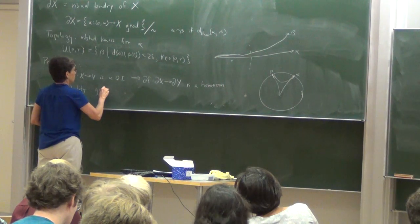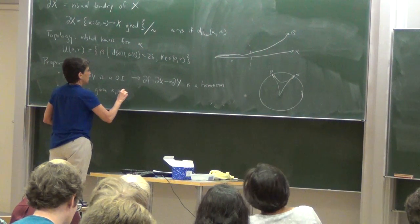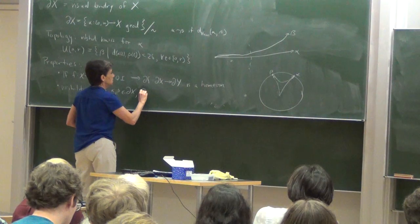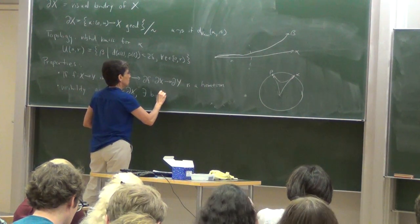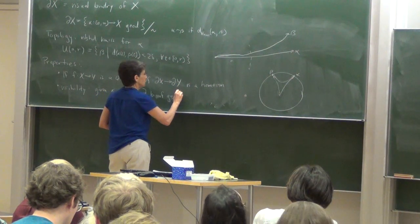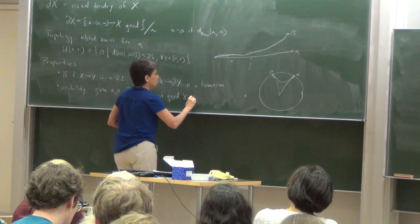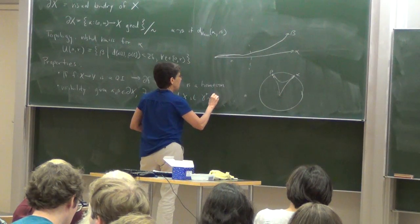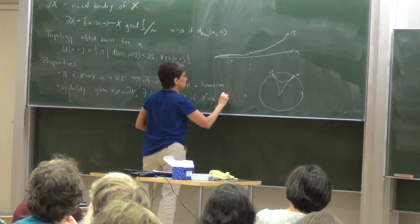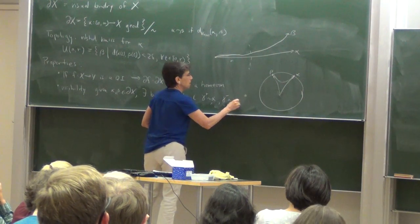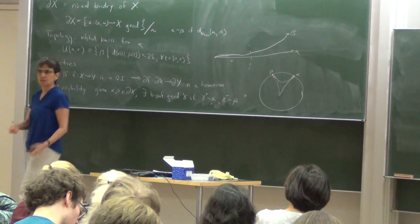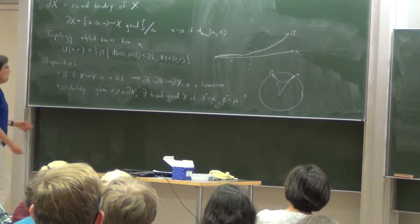So the visibility says that that is possible. Given alpha, beta on the boundary, there exists a bi-infinite geodesic gamma such that in one direction it's equivalent to alpha, and in the other direction it's equivalent to beta. So we can see alpha from beta.